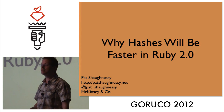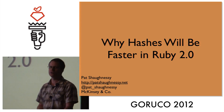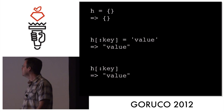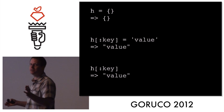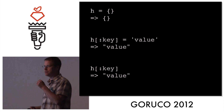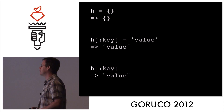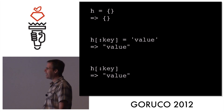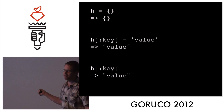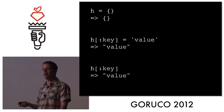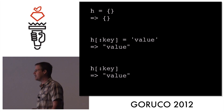I'm here today to talk about why hashes will be faster in Ruby 2.0. All you guys are Ruby developers, so you know how to use hashes and what hashes are. You create an empty hash, you stick a key and a value in, and later when you want the value back, you just provide the key and Ruby finds it for you.